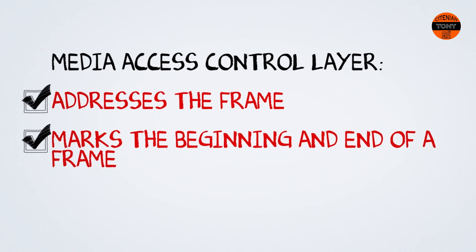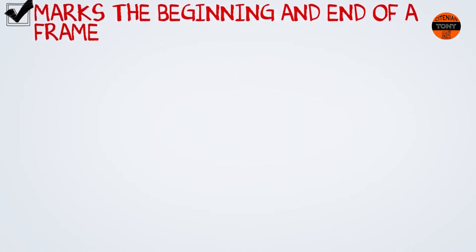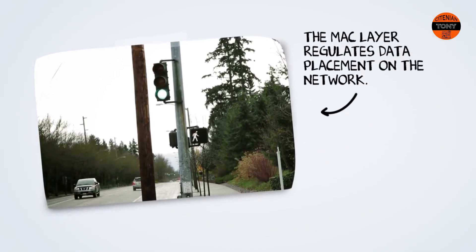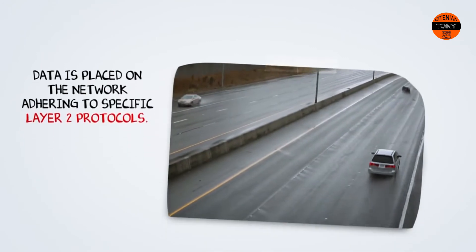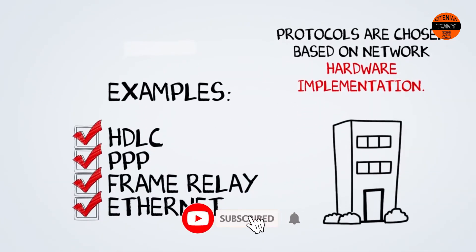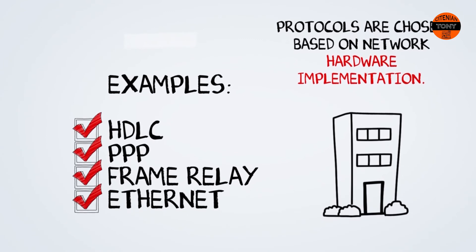The media access control sub-layer also marks the beginning and end of a frame. When you think of the MAC layer, think of the traffic rules that we follow when driving on the roads. Data is placed on the network adhering to specific layer 2 protocols, and the media access control layer makes sure this happens properly. Layer 2 protocols are chosen based on hardware implementation as well as logical topology. Examples of these protocols include the high level data link control or HDLC protocol, the point-to-point protocol or PPP, frame relay, and Ethernet.